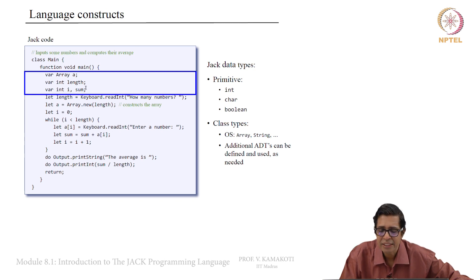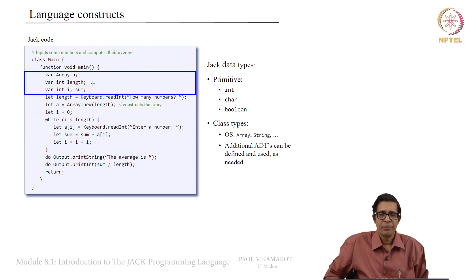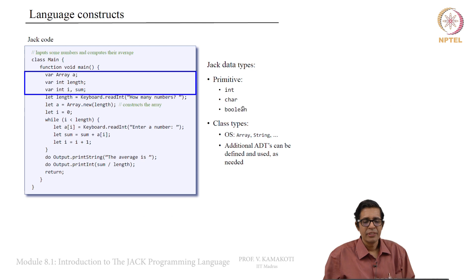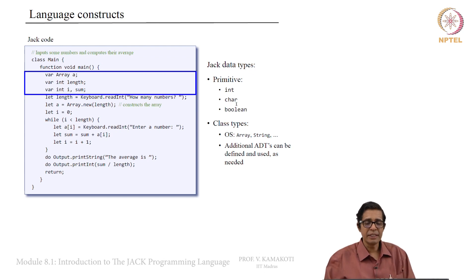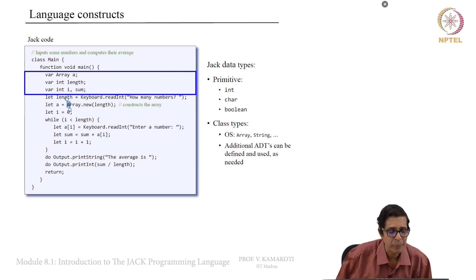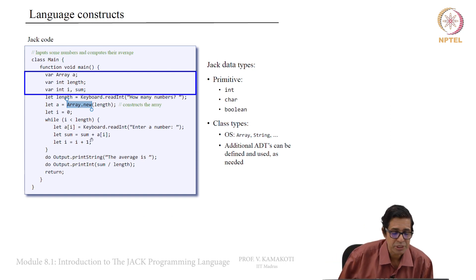There are different data types in Jack. Primitive data types are int, char, and Boolean. Then there are class types such as Array and String, and additional abstract data types can be defined as needed. Array is provided by the operating system as part of the standard class library; Array dot new is a function inside the Array class that creates space for storing elements — similar to malloc. Jack arrays are not typed.